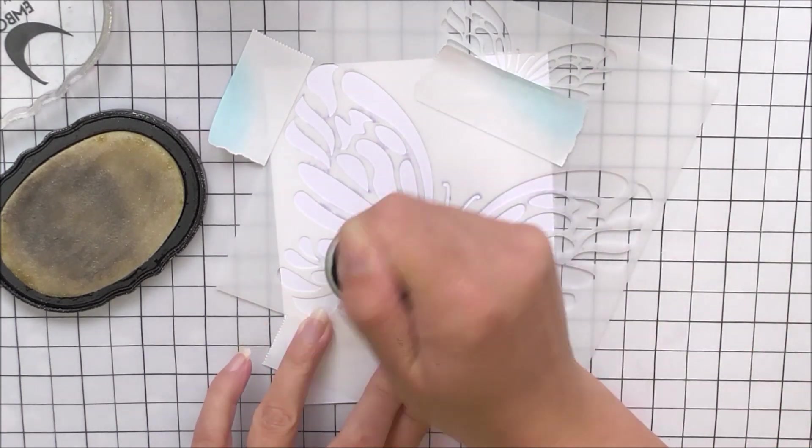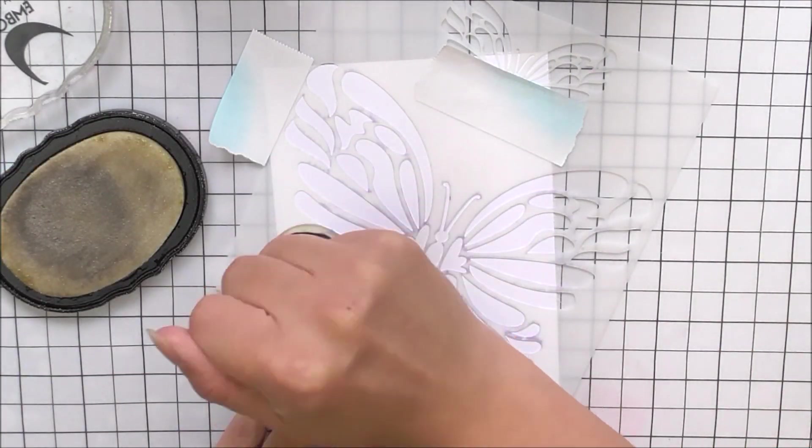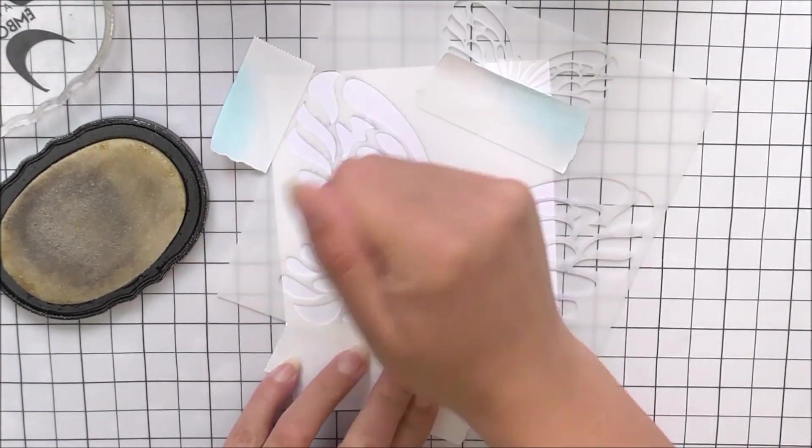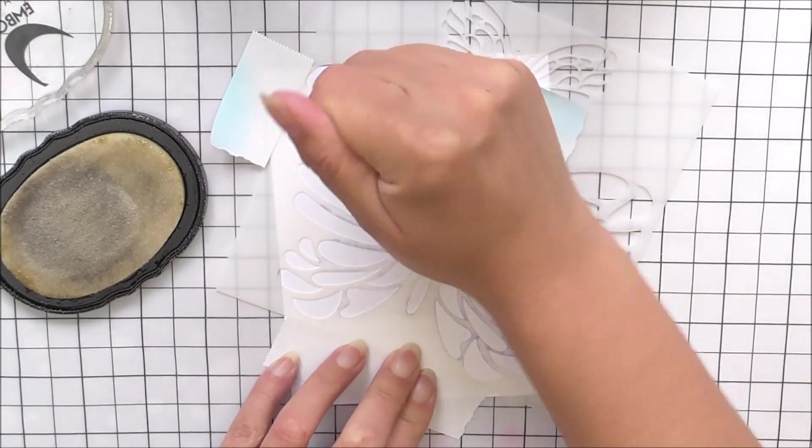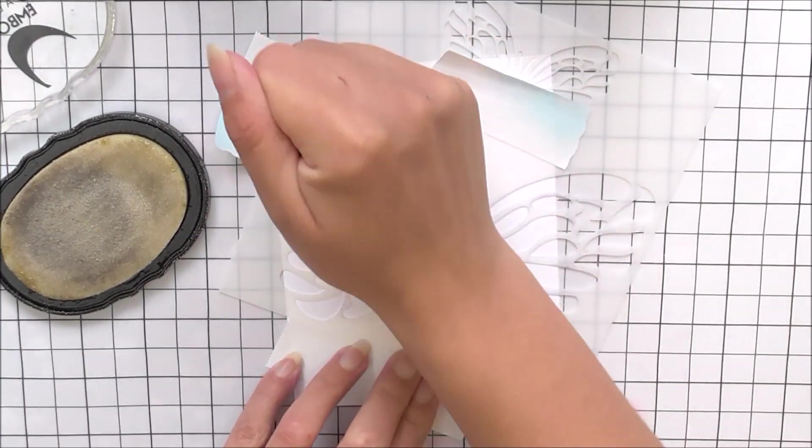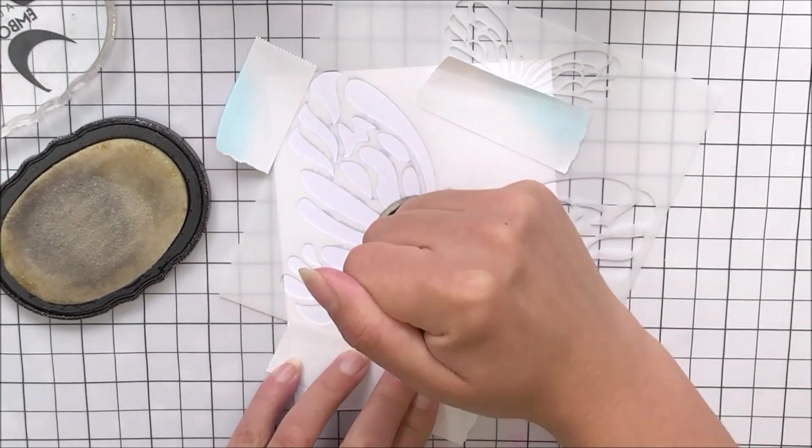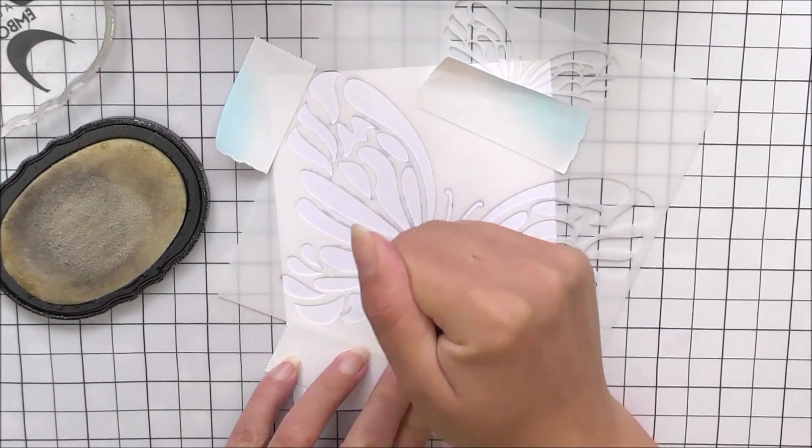I'm then going to take my embossing ink and a foam blender. I do find that using a foam blender for adding the embossing ink through stencils works really, really well. You can use the embossing ink straight onto the stencil and stamp through it, but I do find that this can make it a little bit more messy.